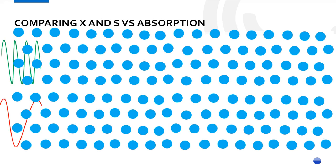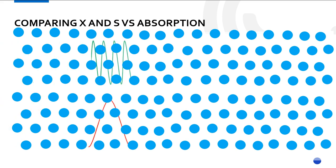Now we're going to compare something different — not short pulse to long pulse, but X band to S band. Here is a time frame, and you can see that X band has three cycles in that time frame whereas S band has only two. X band is a much higher frequency. Look how many molecules the X band is hitting — it's hitting every one of them. But the S band only hits about half of them. These pulses, by the way, are the same pulse length.